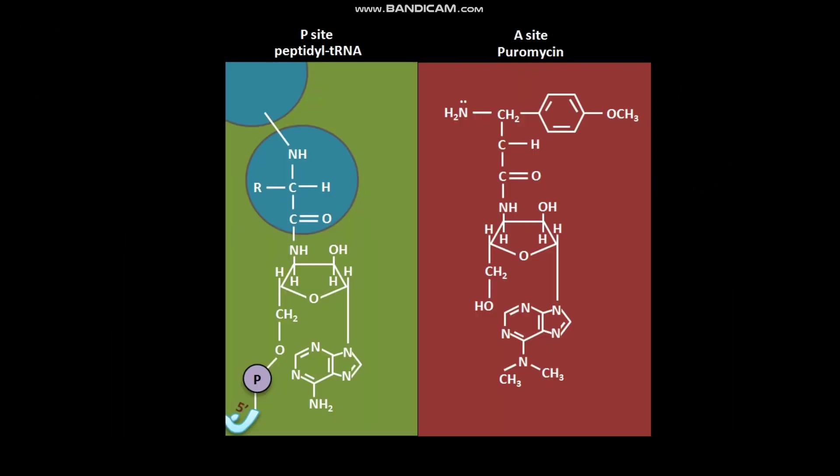The lone pair of electrons present on the nitrogen of the amino group of puromycin attacks the carbonyl carbon of the amino acid bound to tRNA. As a result, a peptide bond is formed.